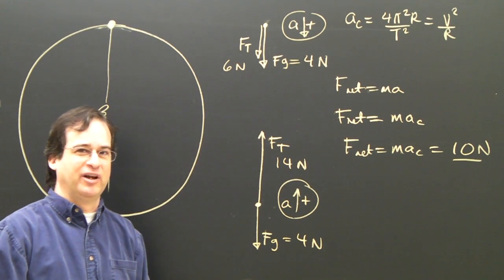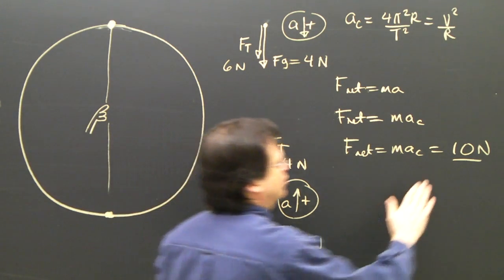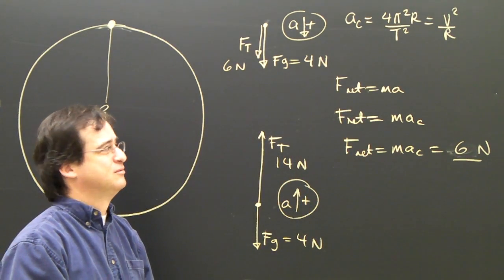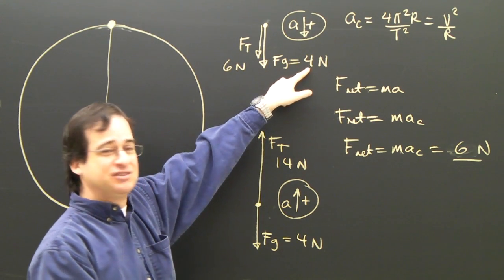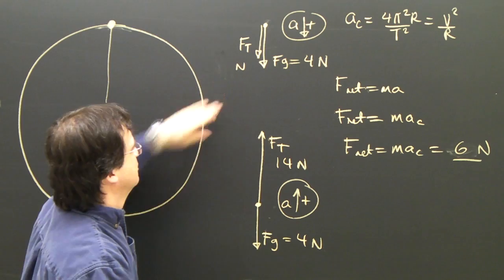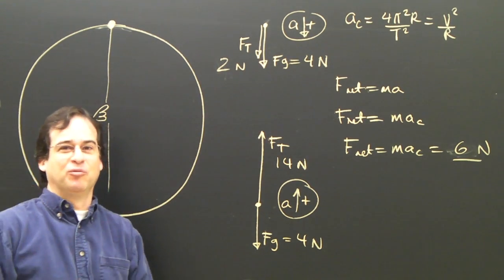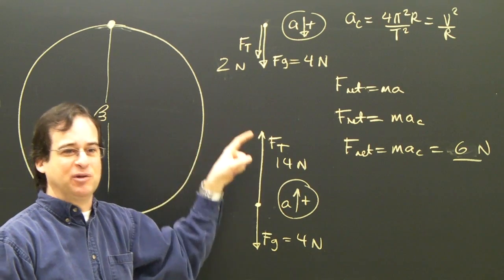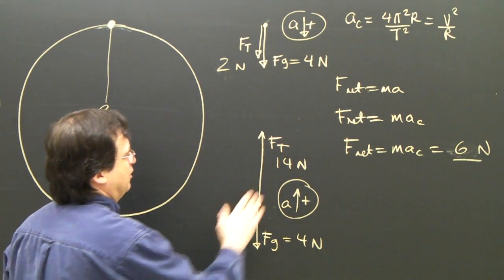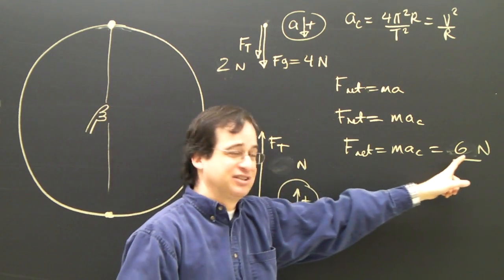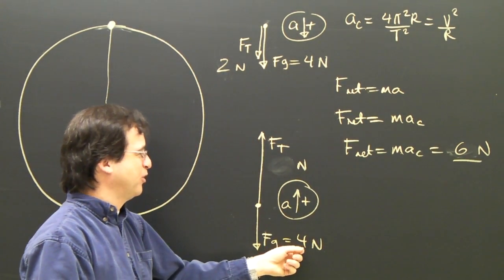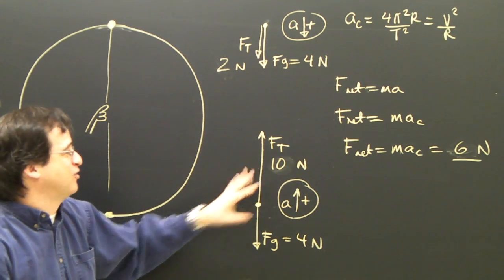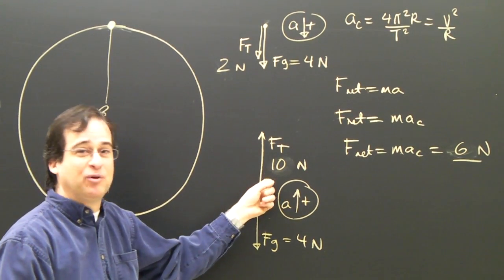Now let's say I swing the rock a little bit slower, and I only need 6 newtons to keep it going in that circle. At the top, gravity provides 4 newtons, so the tension only needs to be 2 newtons — I don't have to pull as hard on the rope when I swing it slower. At the bottom, I need 6 newtons upward, so tension must be 10 newtons up, minus 4 newtons down, giving me 6. You can see that at the bottom I still have to pull harder than at the top.